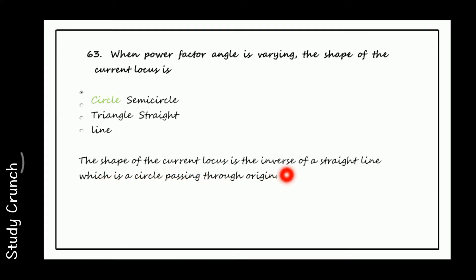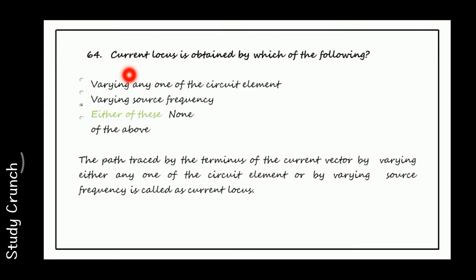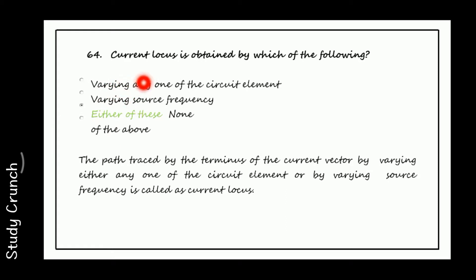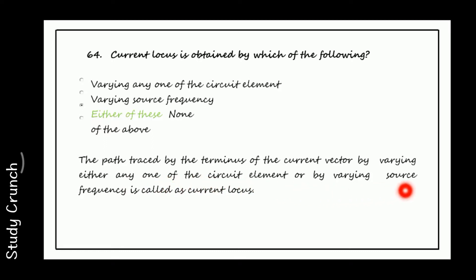Next, current locus is obtained by which of the following? It can be obtained by varying any one of the circuit elements or by varying the source frequency. Either of these can be used. The path traced by the terminus of the current vector by varying any circuit element or frequency is called the current locus.